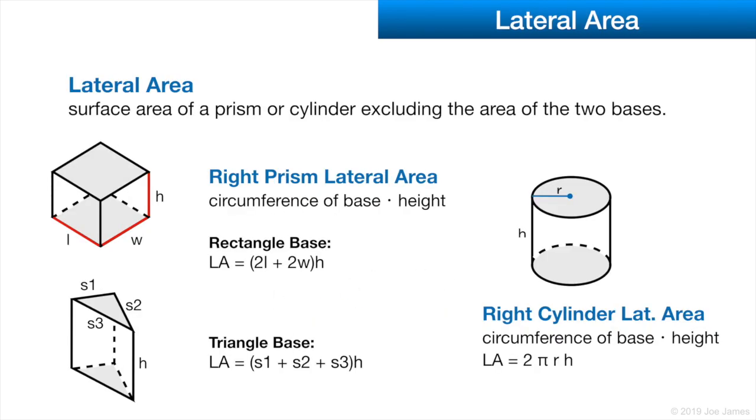The lateral area of a 3D solid is the area excluding the bases. On a prism, we have two different types: a rectangular base or a triangular base. The lateral area is the area of the white sides here, not the top surface or the bottom surface, the top base or the bottom base.